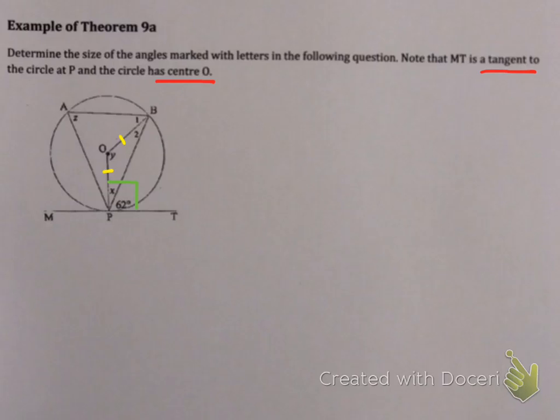So I'm immediately going to label that in because it might be useful. I'm also going to go and label in that X plus 62 will be 90. Because this is a tangent. And theorem seven said tangents were always perpendicular to radii. So we already know quite a lot of information.